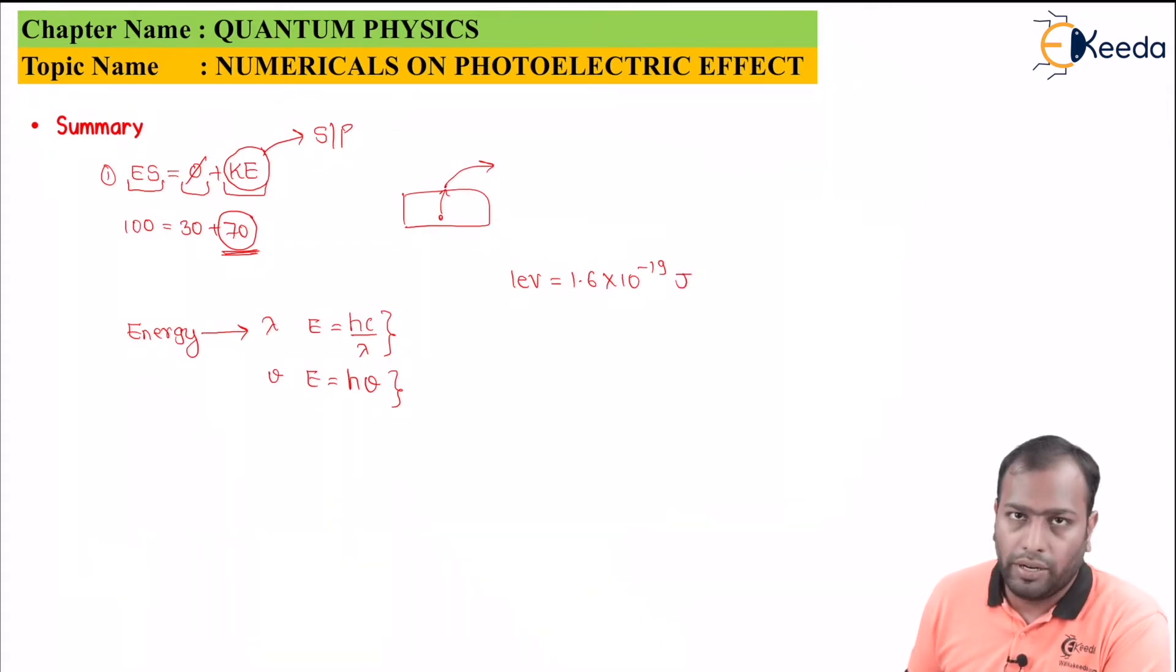This is the conversion that you need to remember because at times in exams you would be asked to find energy in joules or at times you would be asked to find energy in electron volts. Usually the work functions are expressed in terms of electron volts. And whenever you are needed to find the kinetic energy or velocity, because kinetic energy is nothing but half mv square where velocity is v, you need to find the energy in terms of joules because the velocity should be in terms of meter per second which is the SI unit.